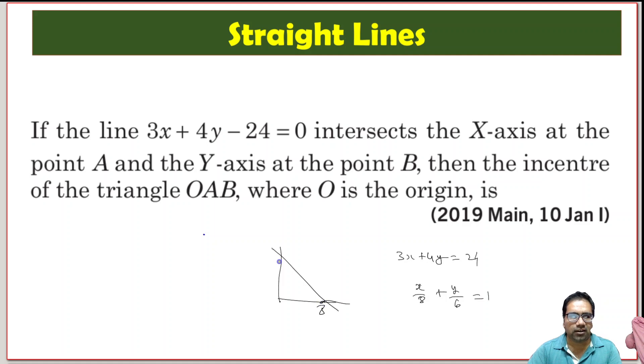What does that mean? The x-intercept is 8 and the y-intercept is 6. And obviously, this is a right-angled triangle.